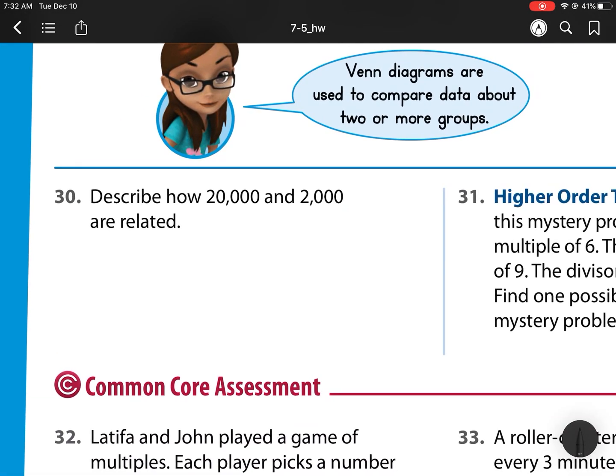Now, for number 30. Describe how 20,000 and 2,000 are related. So, how they're related is 20,000 is 10 times larger or greater or bigger than 2,000.